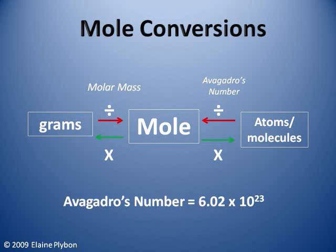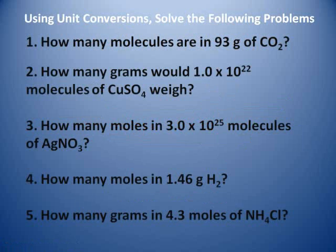If you know how many moles you have but want to know the grams, you would multiply — or "mole-ti-ply." Get it? Any time you go from the mole to something, you're multiplying. Taking a longer stretch, going from atoms to grams, you'd have to first go through the mole: divide atoms by Avogadro's number, then multiply by molar mass to get to grams. Whether you get all that or not, you can still do unit conversions to complete mole conversions. I just thought I'd give you an alternative.